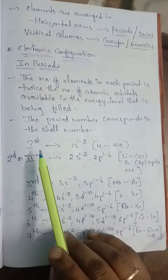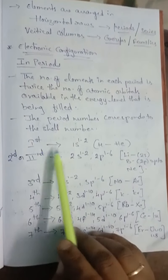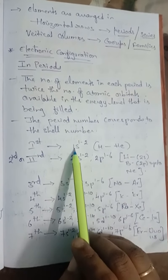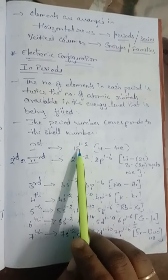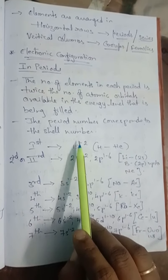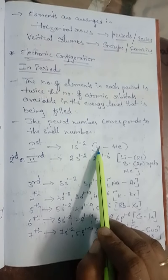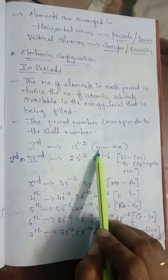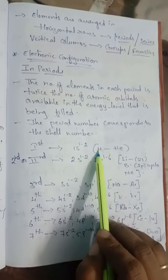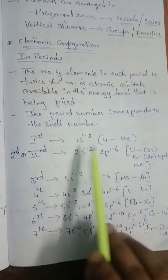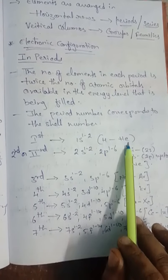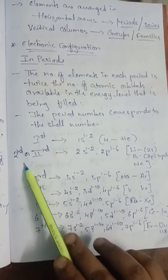In the first period, the electronic configuration will be 1s1-2. In the s orbital, either 1 or 2 electrons may be present. For example, for hydrogen the electronic configuration is 1s1 because its atomic number is 1. For helium it is 1s2. So the first period starts with hydrogen and ends with helium.